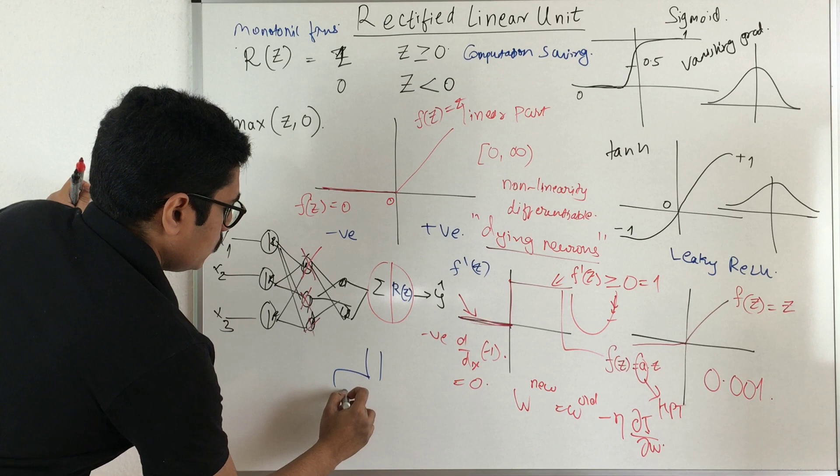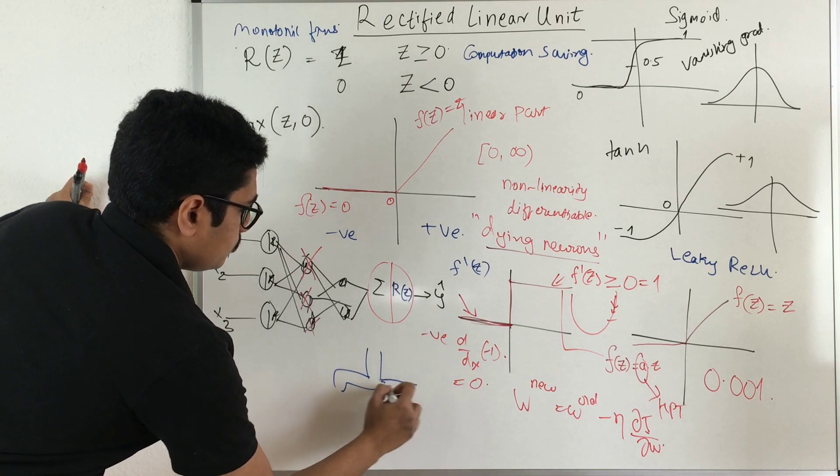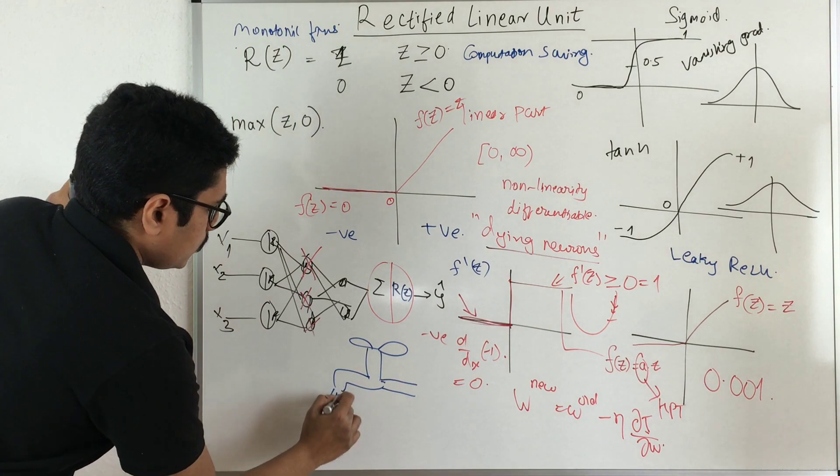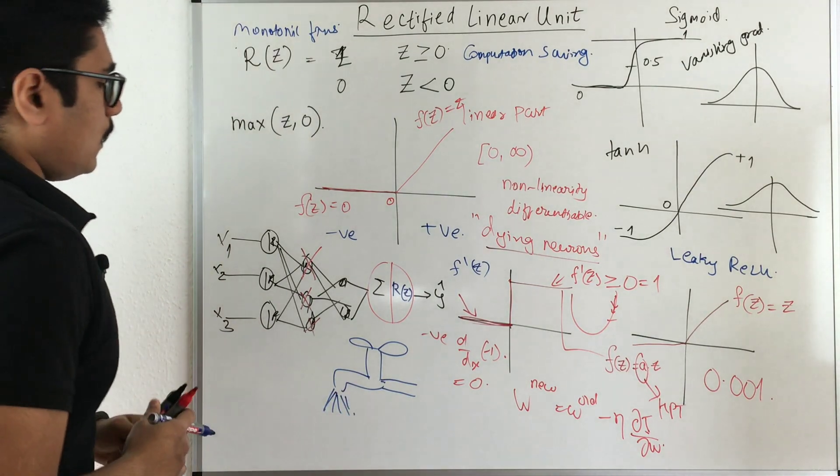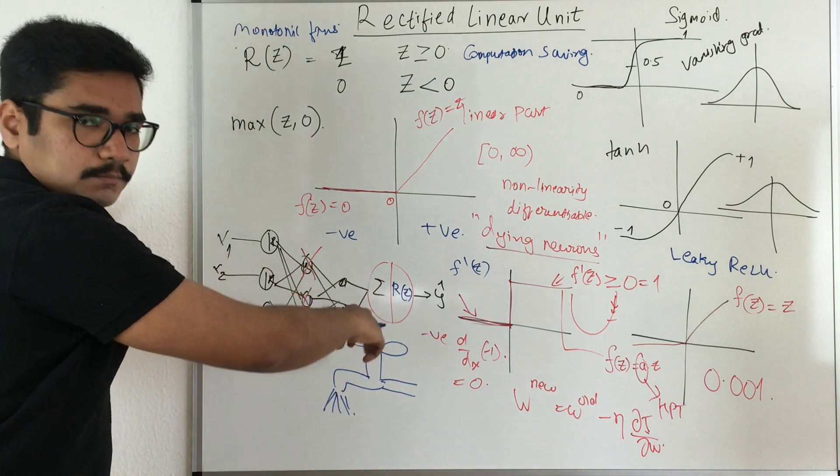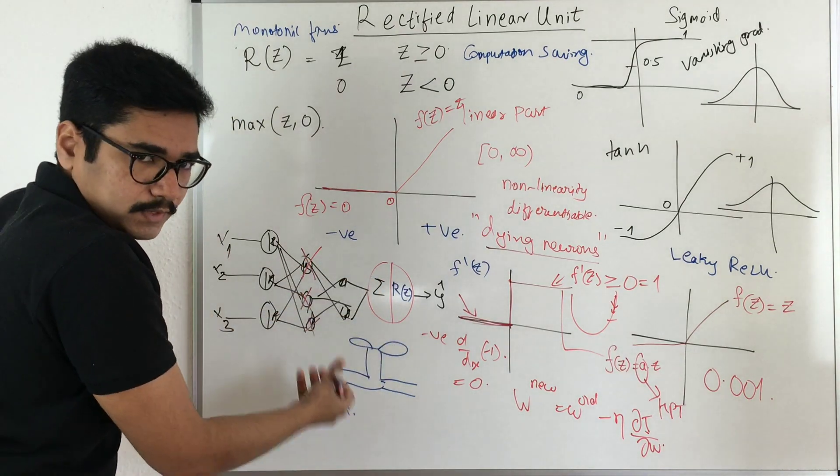Now just to give you a real life example of this particular leaky ReLU, say you have this water tap, say you have this system. So you have water that is flowing out of this. Now in case of requirement what you do is you just turn this tap and you get the water. So that is your output.